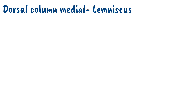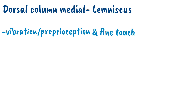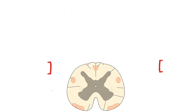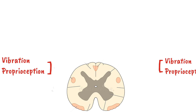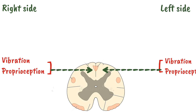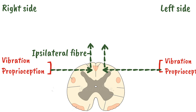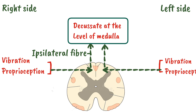Now let's look at the second sensory tract: the dorsal column medial lemniscus system. This system carries the sensation of vibration, proprioception and fine touch. Whenever peripheral nerve endings feel these sensations, they reach the dorsal column from both the right and left sides and rise upward in the spinal cord. The dorsal column system carries ipsilateral nerve fibers, meaning the right side contains fibers from the right side and the left side contains fibers from the left side. These nerve fibers ascend in the spinal cord and decussate at the level of the medulla, after which they reach the thalamus and the brain perceives the sensation of vibration, proprioception and fine touch.